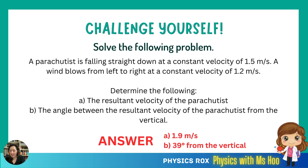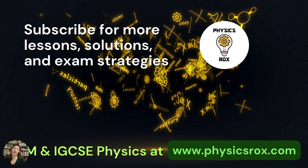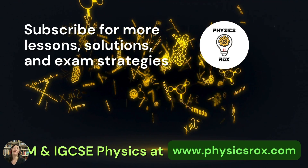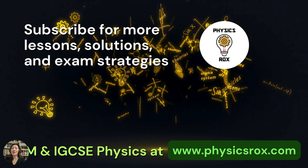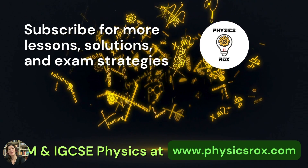To finish up, I suggest you challenge yourself by solving this problem: A parachutist is falling straight down at a constant velocity of 1.5 meters per second. The wind blows him from left to right at a constant velocity of 1.2 meters per second. Determine: A, the resultant velocity of the parachutist; and B, the angle between the resultant velocity of the parachutist from the vertical line. The answers you should obtain are 1.9 meters per second as the resultant velocity, and the angle of the resultant velocity from the vertical should be 39 degrees. If you found this video educational and helpful, please click like and subscribe for more lessons, solutions, and exam strategies. Please visit my website at physicsrocks.com. Happy studying!